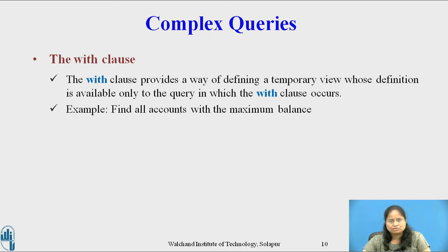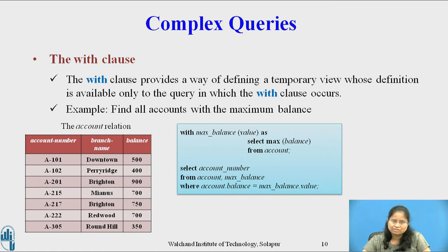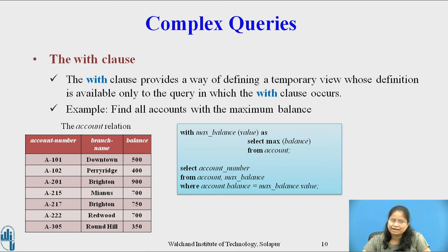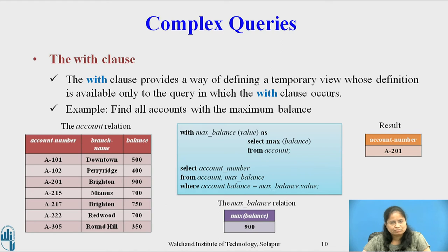Example: find all accounts with the maximum balance. The relation required is account. The query is given on this slide. This query selects the account with the maximum balance. If there are many accounts with the same maximum balance, all of them are selected. We could have written this query using nested subqueries in either the FROM or WHERE clause, but using nested subqueries would have made the query harder to read and understand. The WITH clause makes the query logic clearer and permits a view definition to be used in multiple places within a query. The query using WITH clause returns the maximum balance of 900 from the account relation, and the SELECT-FROM-WHERE clause returns the account number with the maximum balance.